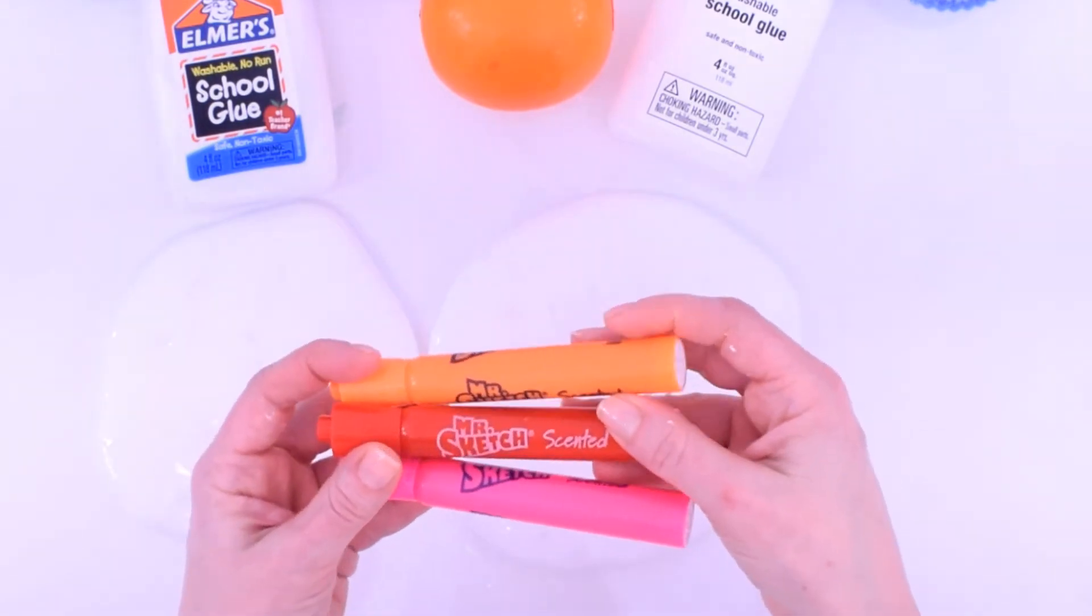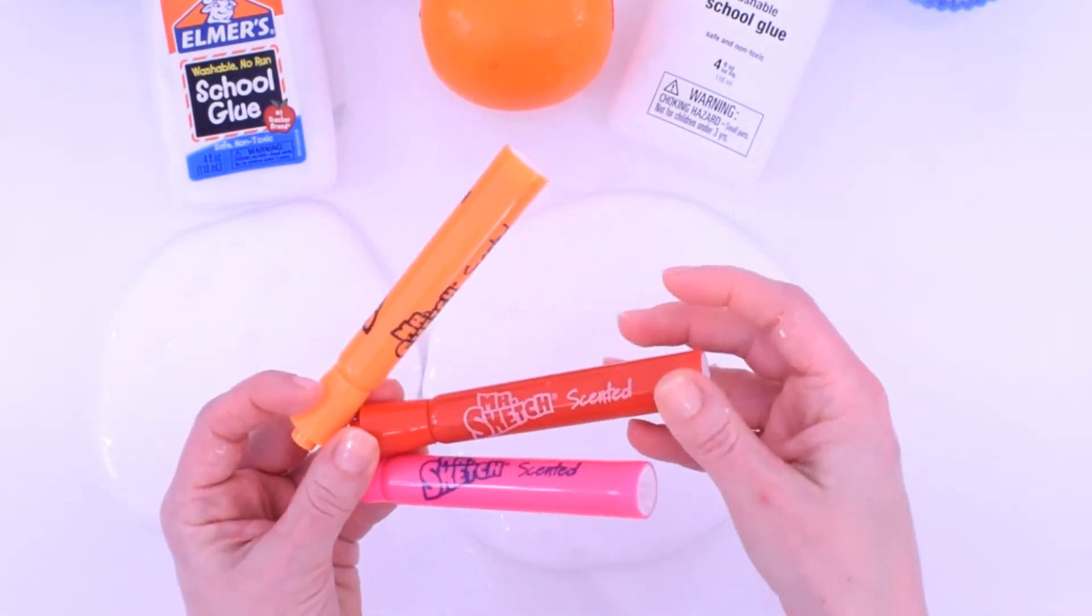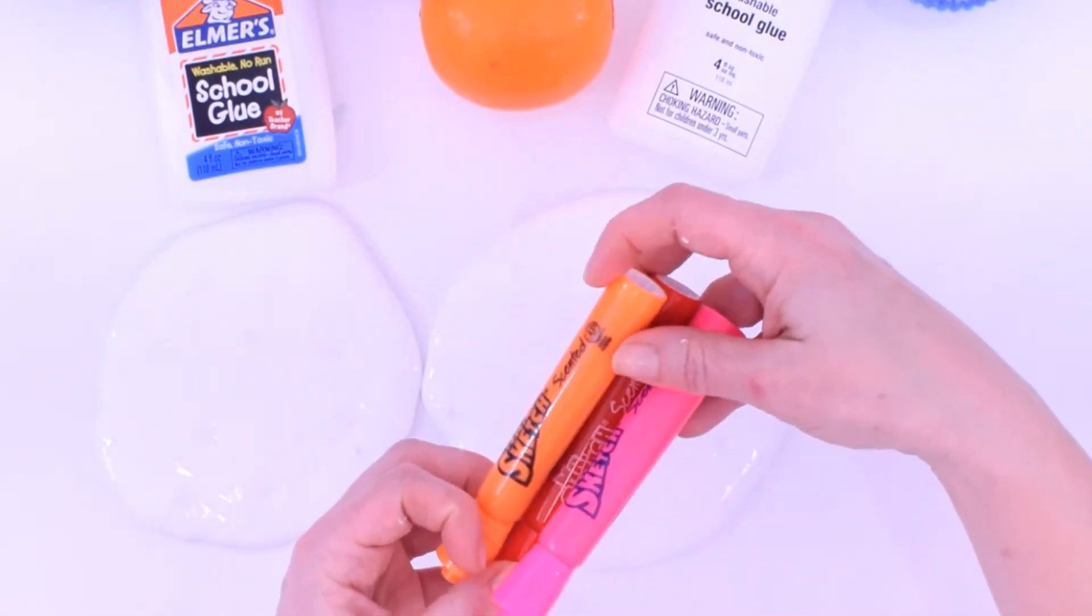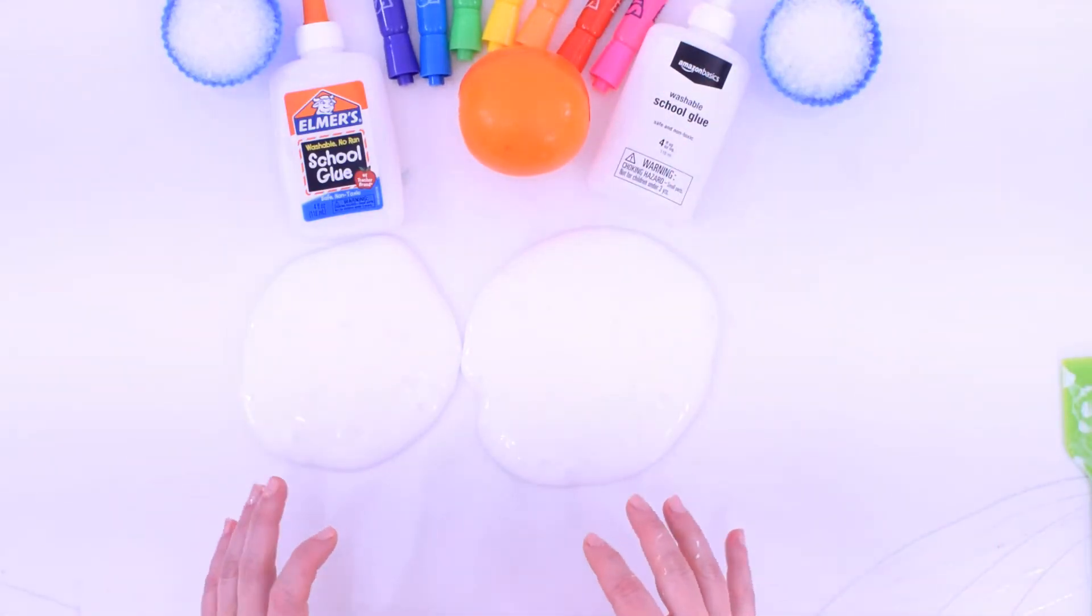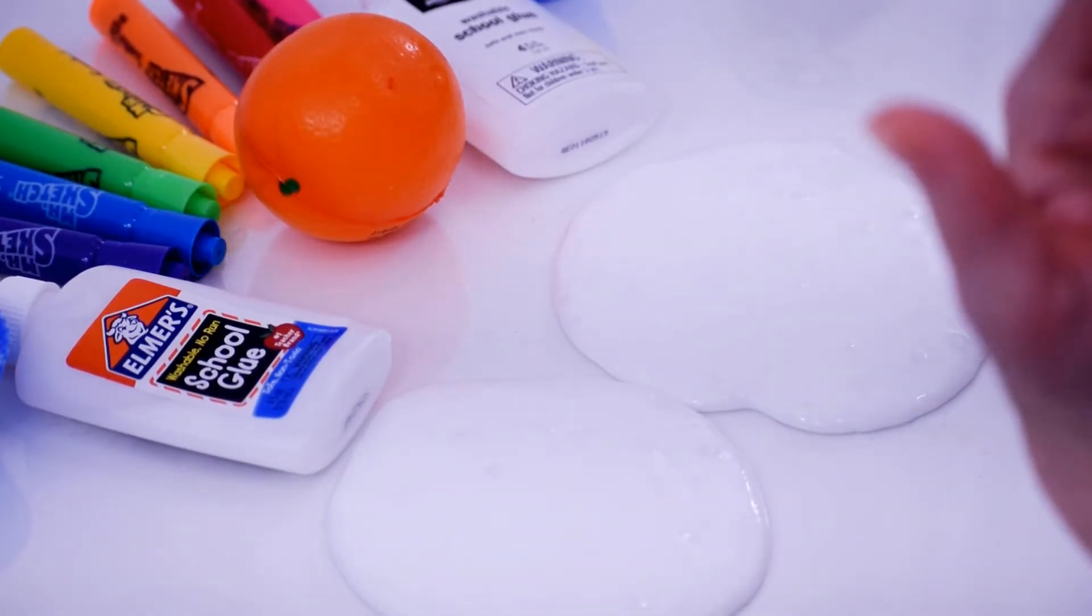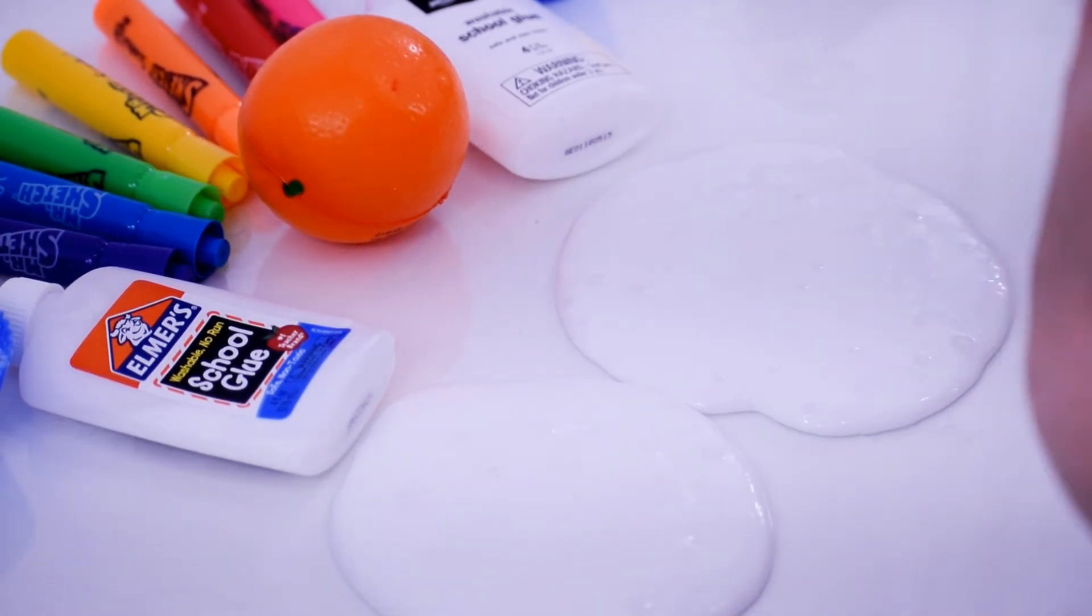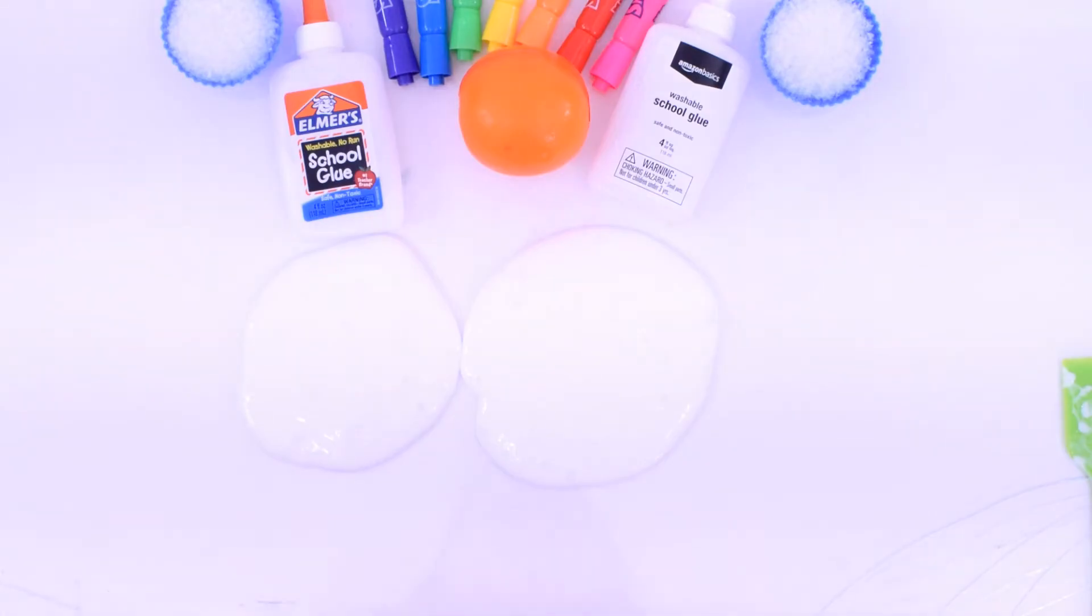Orange is orange, red is probably cherry, and pink is probably bubblegum or strawberry, and so on and so forth. So if you are into scented slimes, you can get scented markers. I know Mr. Sketch does it and Crayola and some other ones. So you get like double bang for your buck. You get color and you get scents.